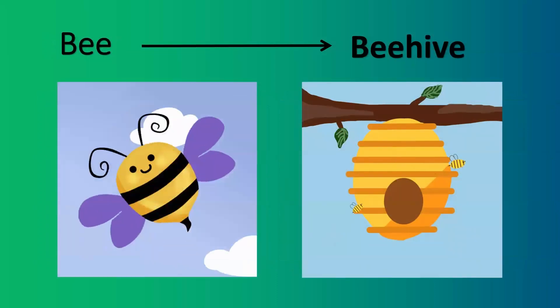Our next one is bee. Where does bee live? Bee lives in a beehive. What is it friends? Beehive.